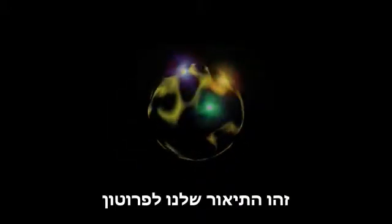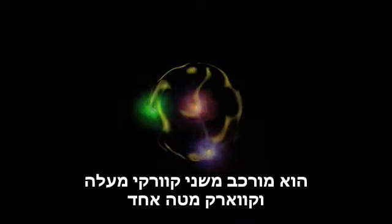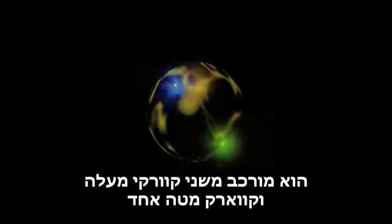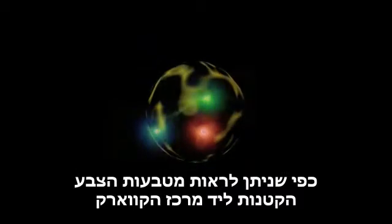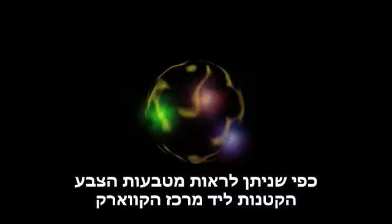This is our depiction of a proton. It is composed of two up quarks and one down quark, as you can see from the tiny rings of color near the center of the quark.